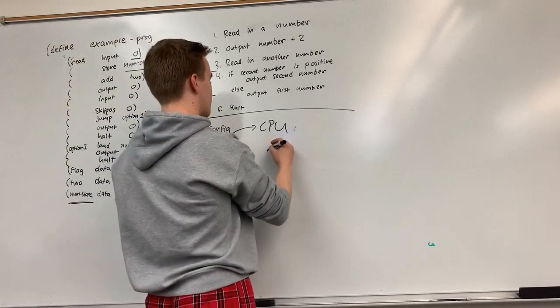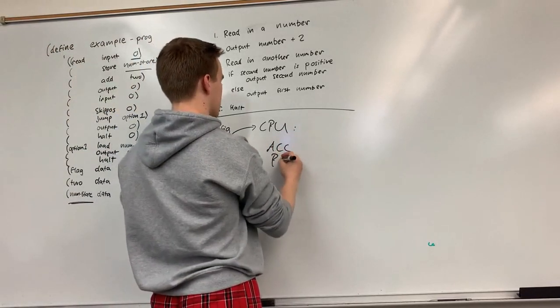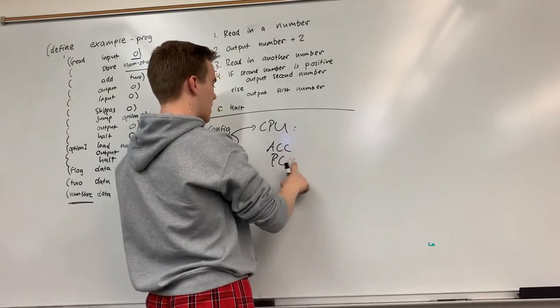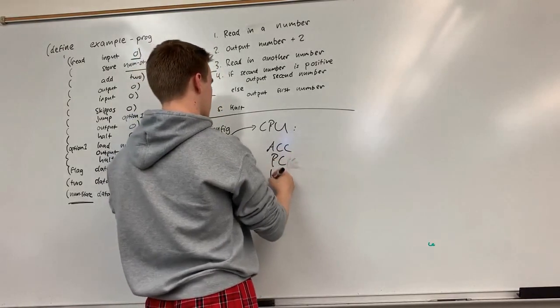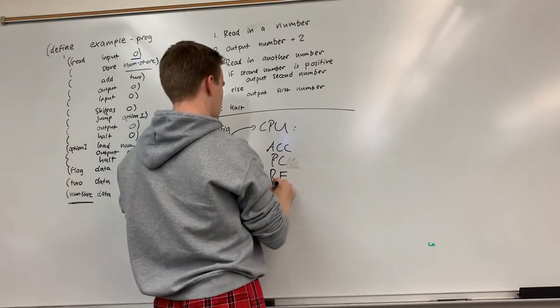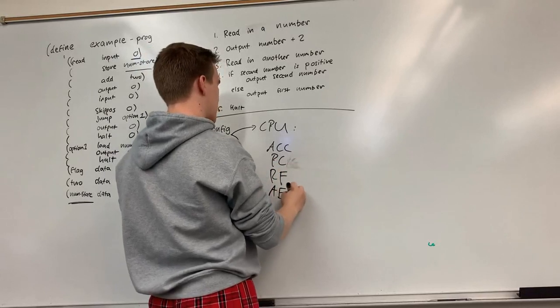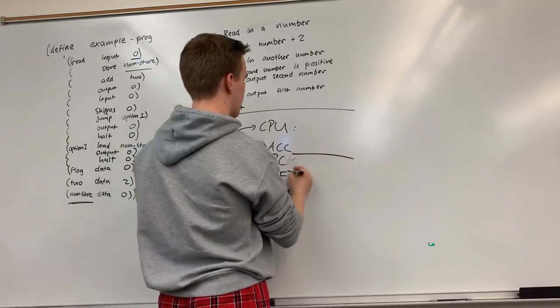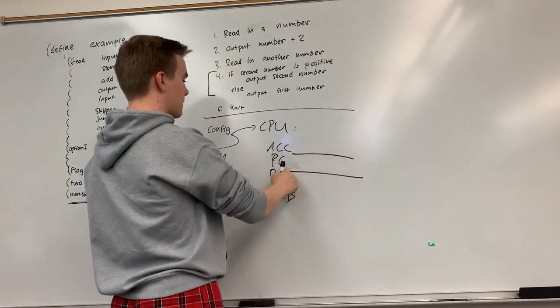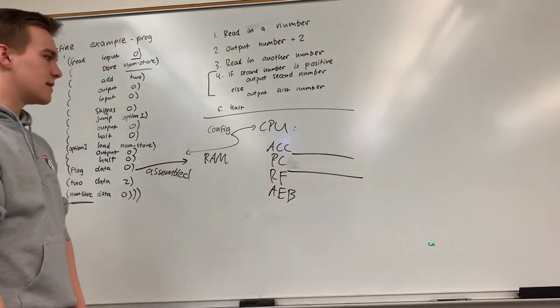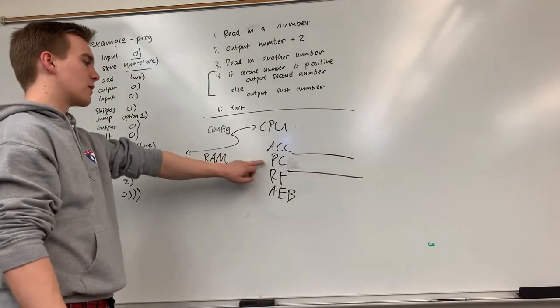The CPU is comprised of the ACC, the accumulator, the program counter, the run flag, and the arithmetic error bit, the AEB. Right now we're just really going to think about the ACC and the PC, the accumulator and the program counter.